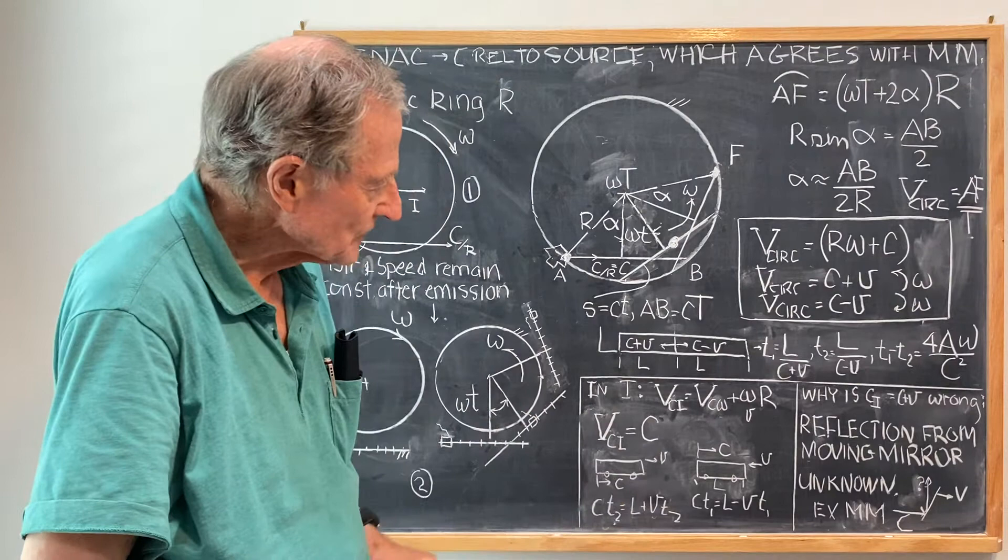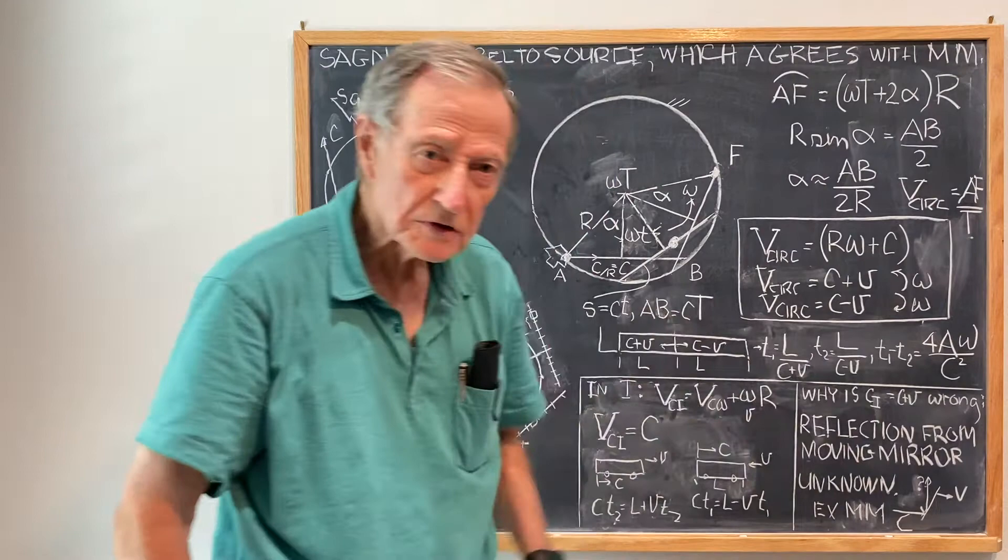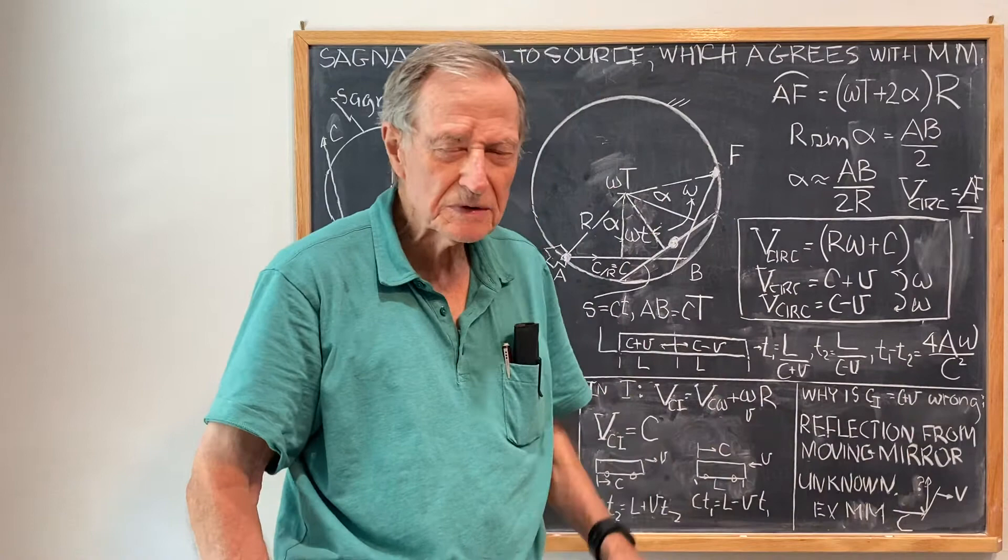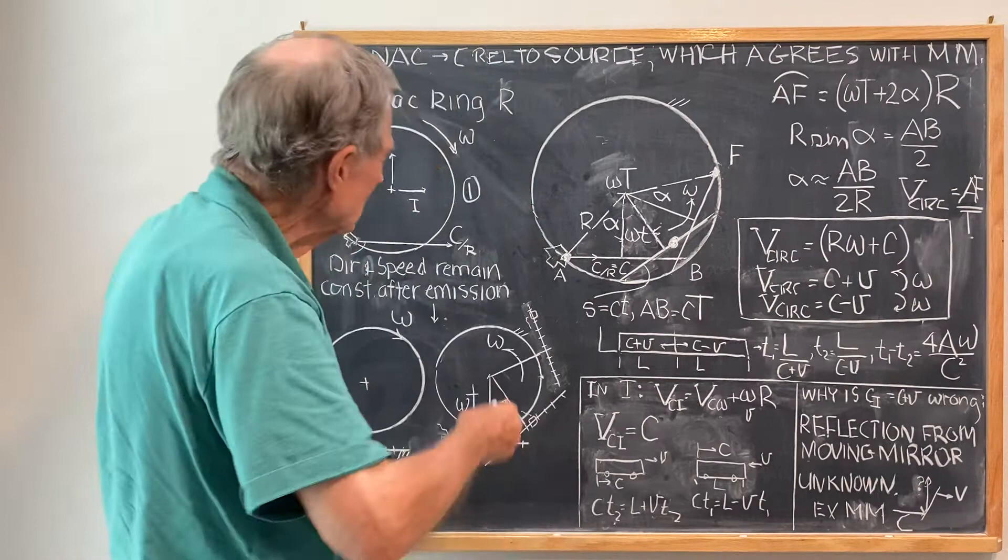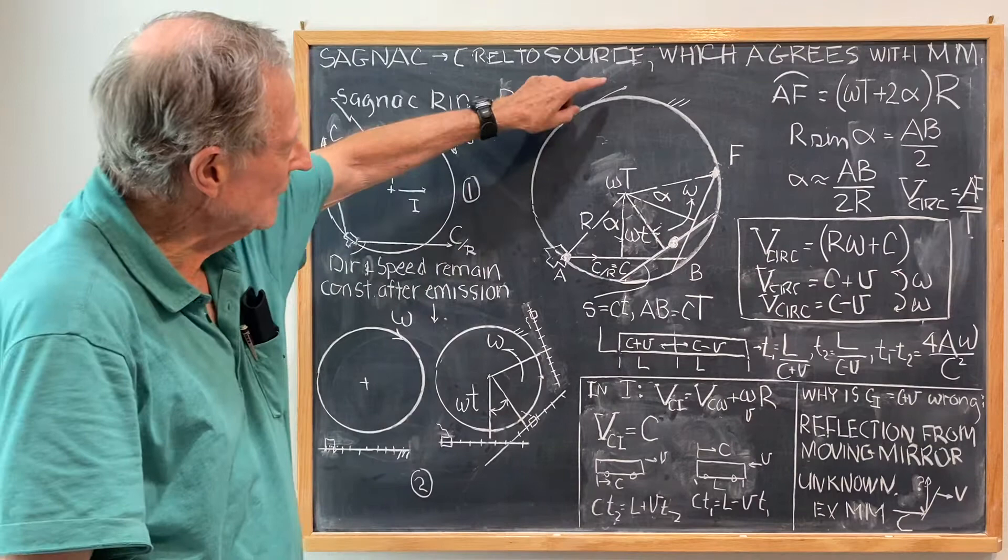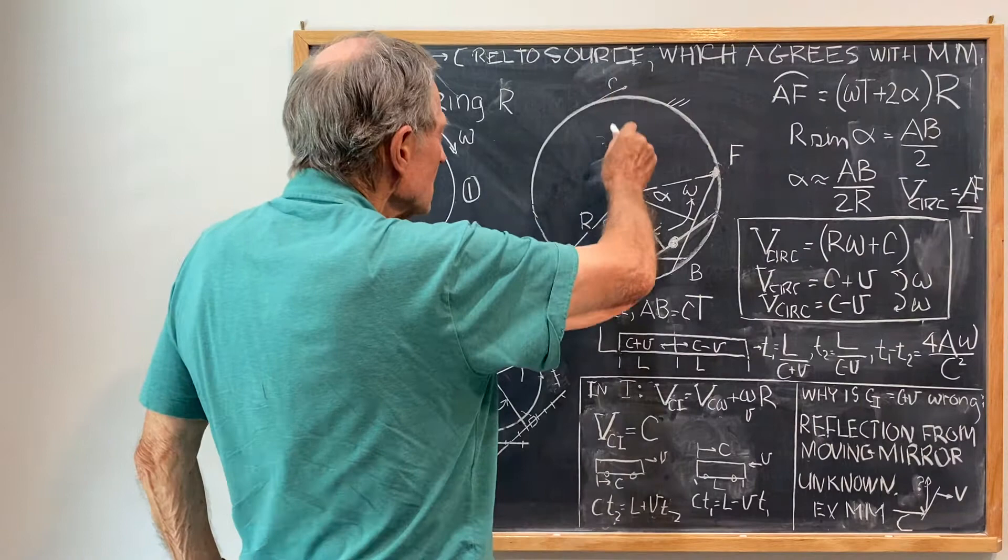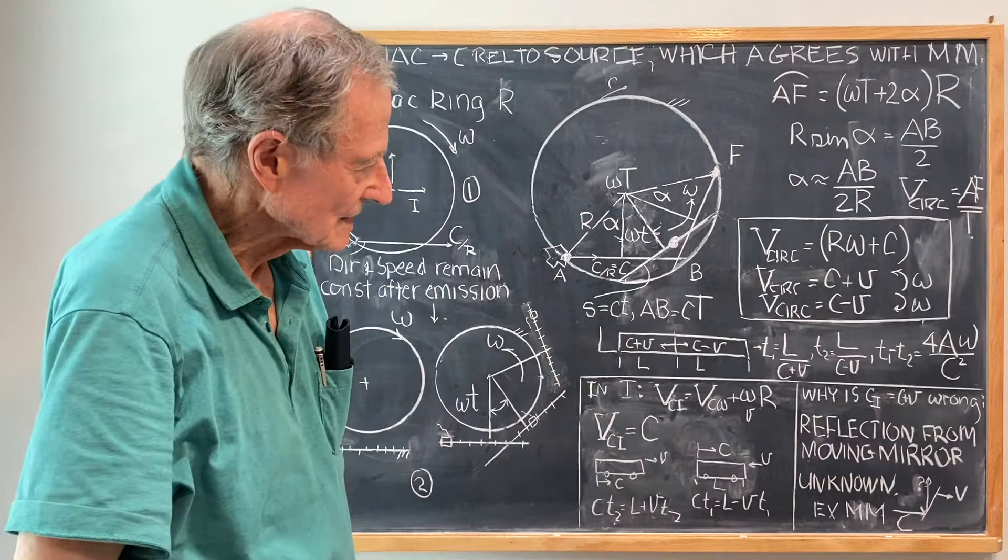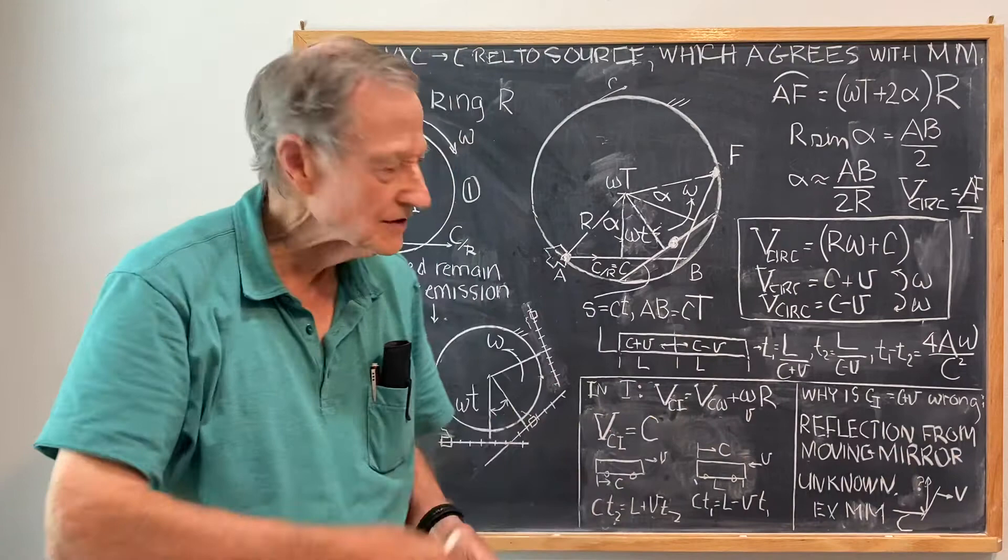Now, this is a little bit disturbing because the question comes up, why isn't C in the inertial frame equal to V plus omega R, which would be the classic expression for if I have a rotating ring and I fire a bullet, say, in that direction, then the velocity in the inertial frame will be C plus R times the angular velocity. But if you make that classic assumption, the result is that there is no interference, it's wrong.